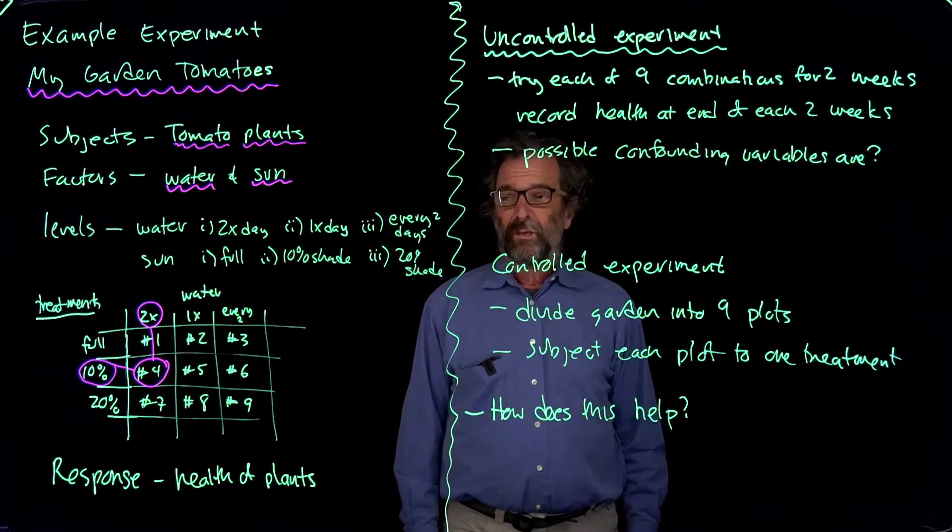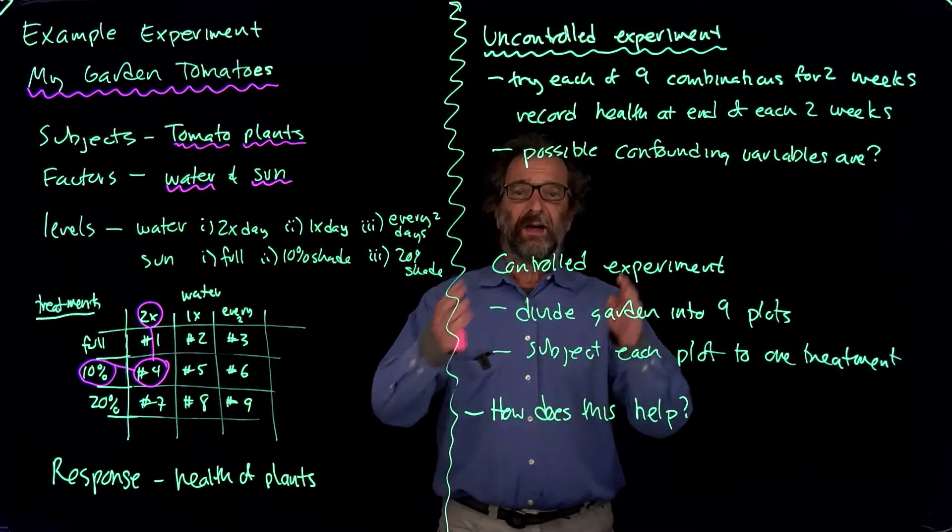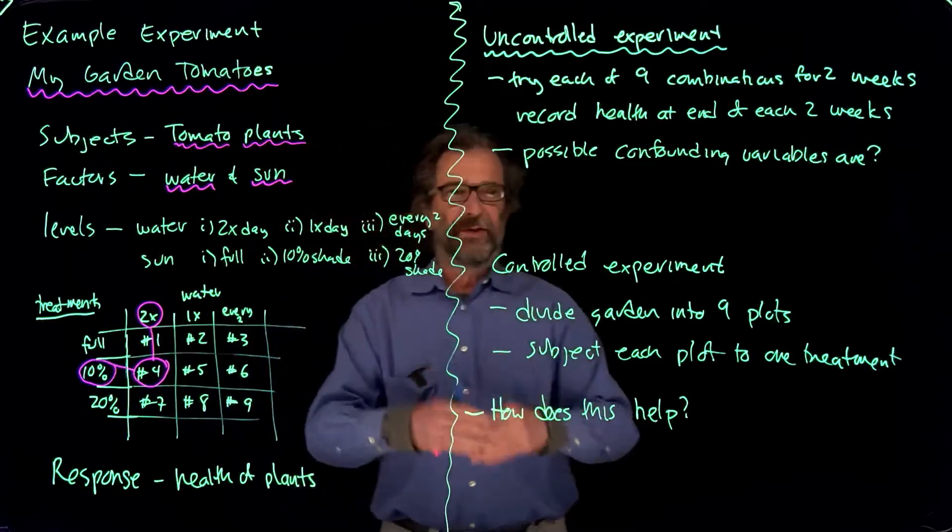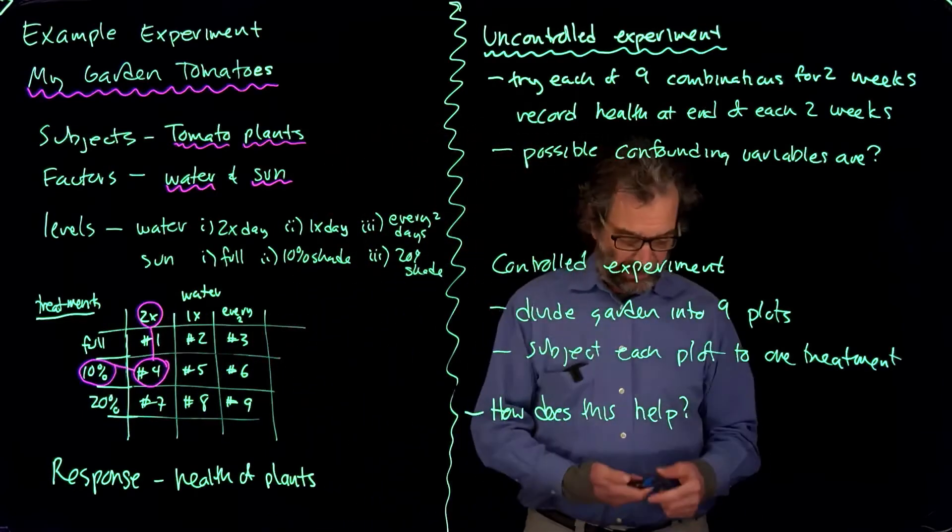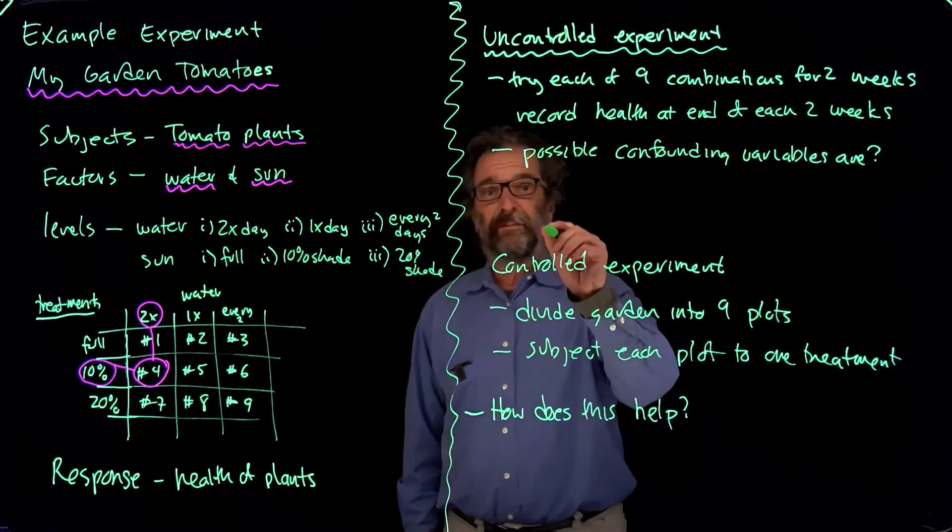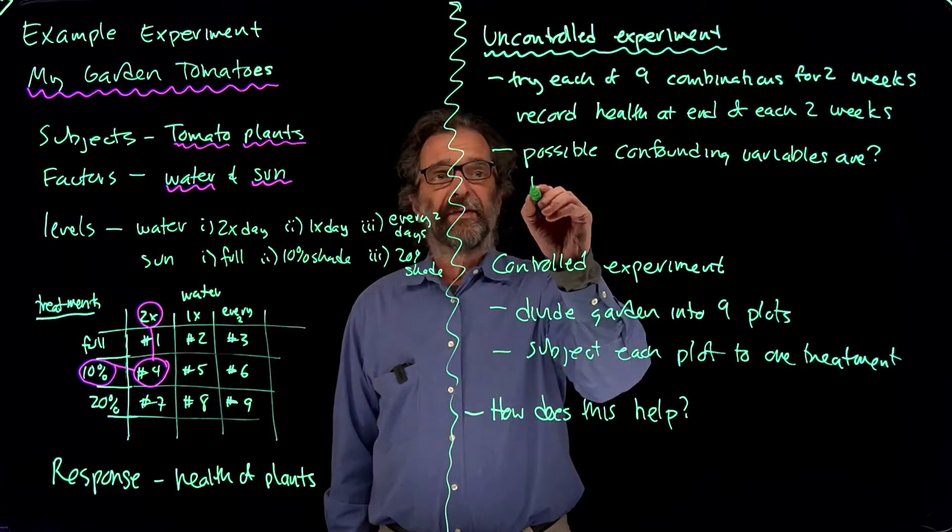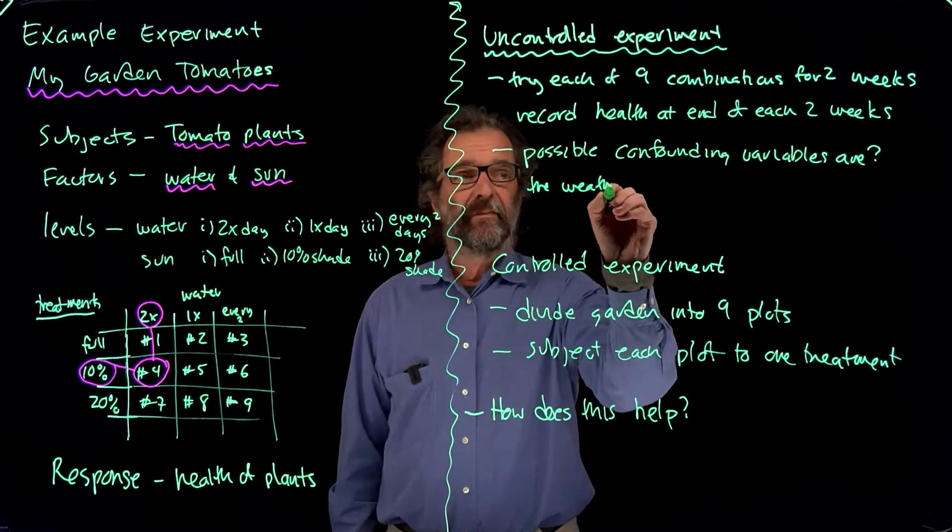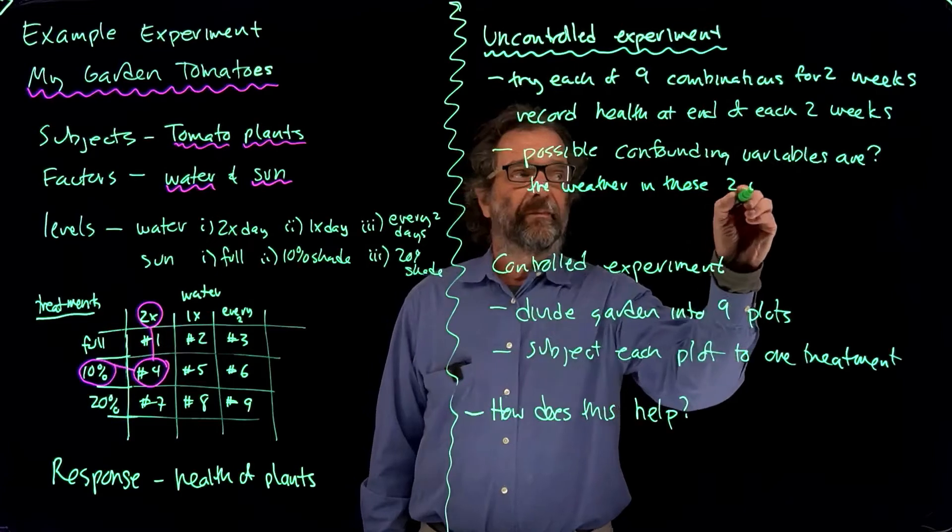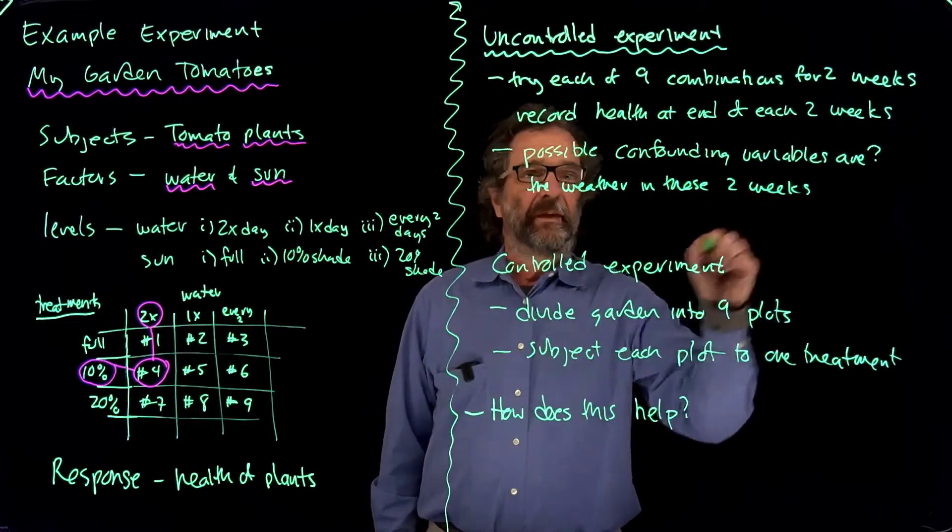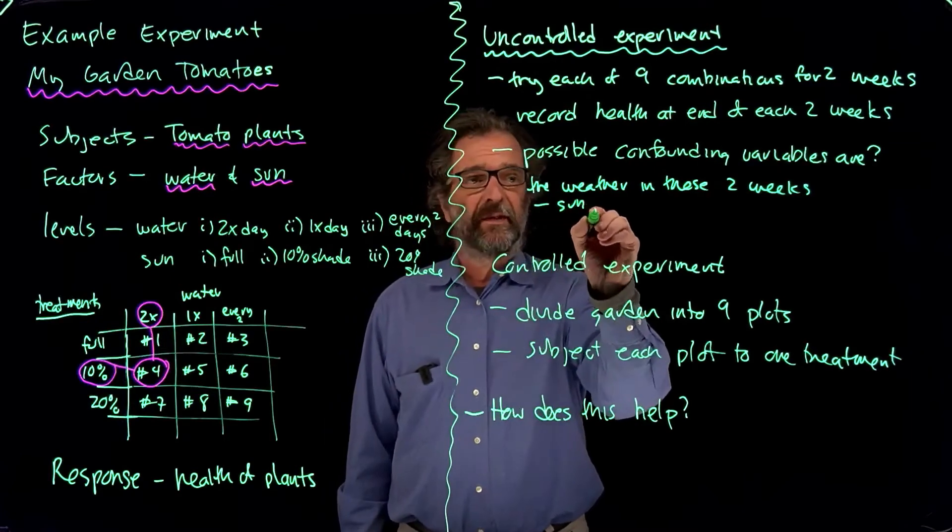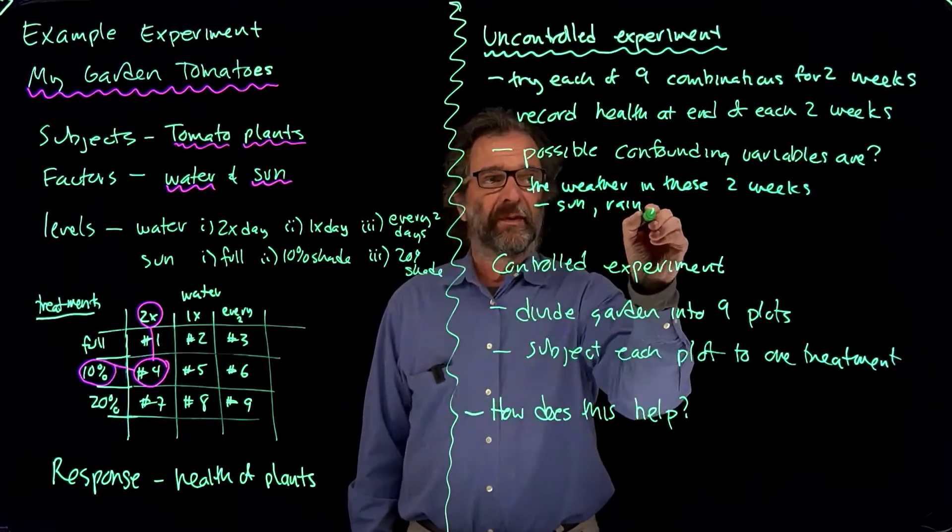And we're wondering about possible confounding variables. Since we do this two weeks at a time, we try one strategy for two weeks, another strategy for two weeks, and so on. There's something else that could be determining how healthy the plants are, and that would be the weather in those two weeks: all the aspects, how much sun, how much rain, the temperature.